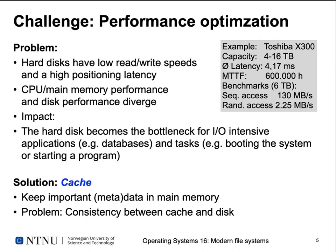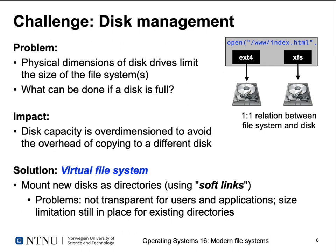One solution to hide this performance problem is to introduce a cache — a disk cache works like a CPU cache, keeping an excerpt of disk data in main memory for much faster access. We want to keep important data and metadata in memory. The problem is when changed data exists only in memory and hasn't been written back to disk: a system crash loses everything in main memory, creating inconsistent data.